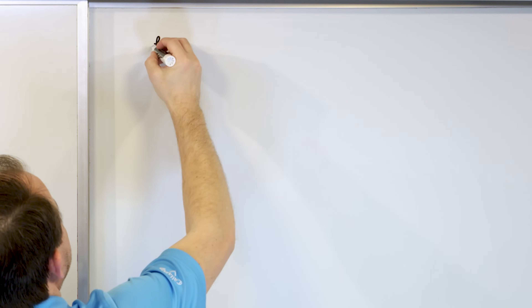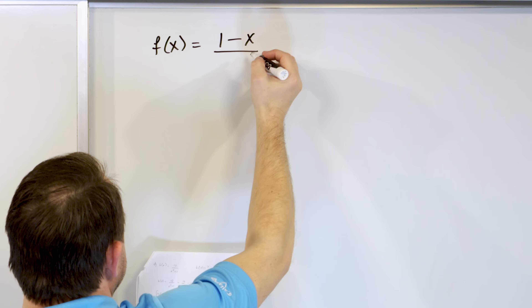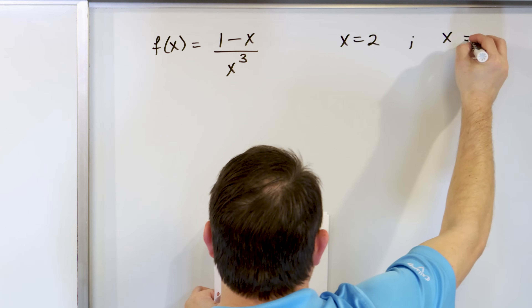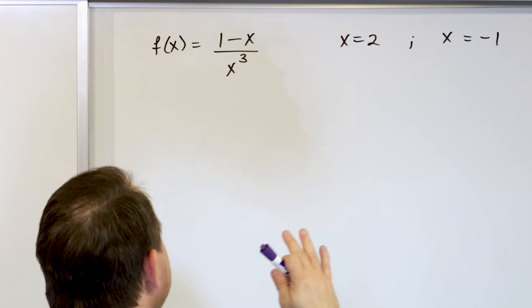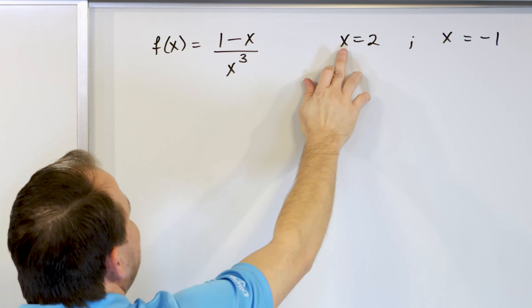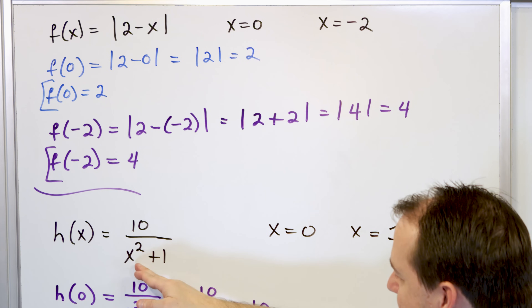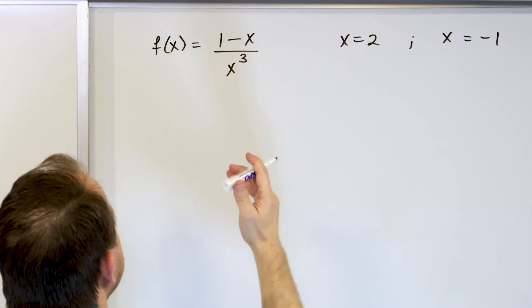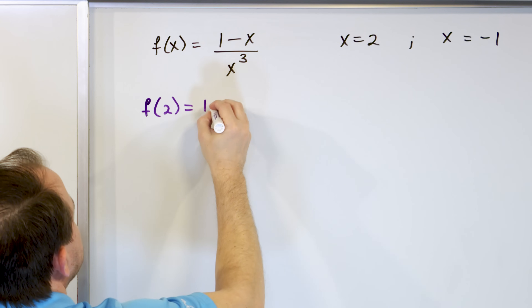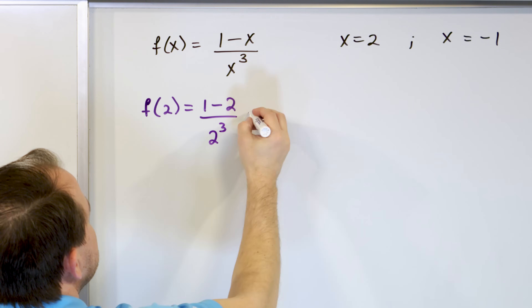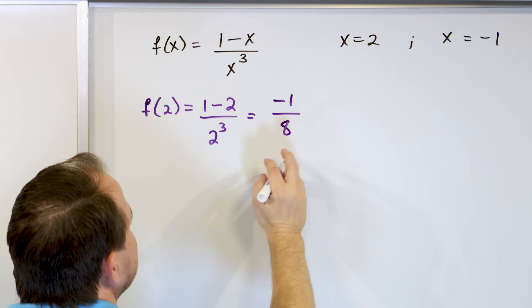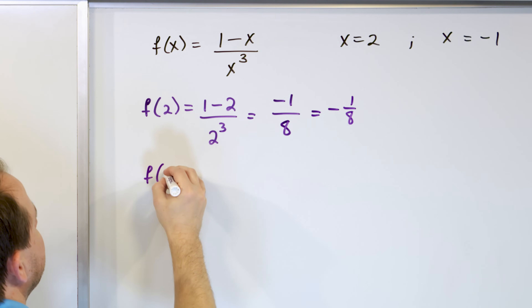For one more example, f of x equals 1 minus x on top divided by x cubed on the bottom. We want to evaluate at x equals 2 and x equals negative 1. Notice x appears in two locations but you substitute the same value in both. f of 2 is 1 minus 2 on top — that's negative 1 — over 2 cubed on the bottom. 2 cubed is 2 times 2 times 2, which is 8. So the answer is negative one-eighth.